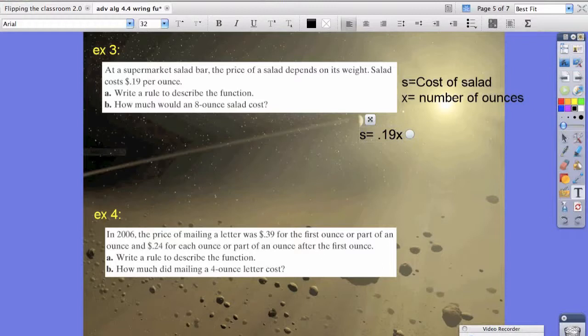The next question, part b, says, how much would it cost for an 8 ounce salad? So if we know our x is equal to 8 ounces, then all we simply need to do is take the equation that we wrote in part a and figure that out. So s equals 0.19x. And our x value just happens to be 8 ounces because that's what they wanted us to test. And we're going to find that our salad equals $1.52 for 8 ounces.